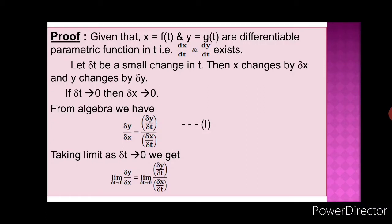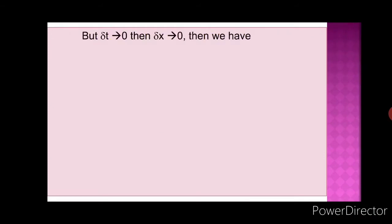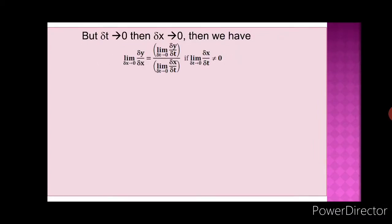We have the condition that whenever δt tends to 0, δx also tends to 0. So on the left side we can write the limit as δx→0 of (δy/δx). On the right hand side, we separate numerator and denominator: limit as δt→0 of (δy/δt) in the numerator, and limit as δt→0 of (δx/δt) in the denominator.